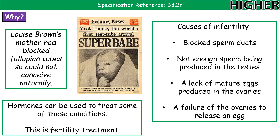Now we've looked at how to prevent pregnancy, let's look at how to help people get pregnant when they may have certain issues doing so naturally — this is where we look at fertility treatments. There's a range of reasons someone may be infertile: for men, it might be blocked sperm ducts, not enough sperm being produced, or sperm that aren't motile enough to reach the egg. For females, it could be a lack of mature eggs being produced or the ovaries not releasing an egg when they should, all making it very hard to get pregnant through natural means.